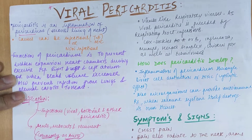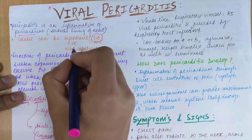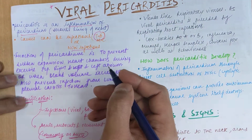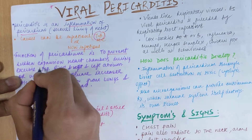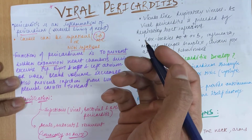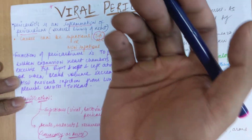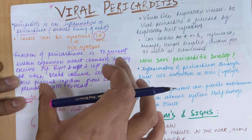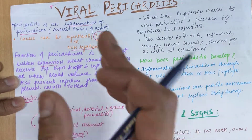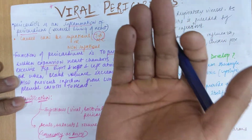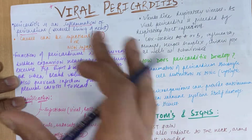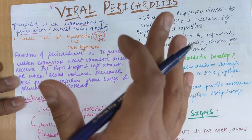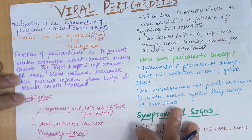The causes can be infectious — tuberculosis most commonly — and non-infectious as well. The function of the pericardium is to prevent sudden expansion of the heart chambers during exercise, especially the right and left atrium, or when blood volume increases. It also prevents infection from the lungs and body cavities from reaching the heart, acting as a protective layer of the heart.